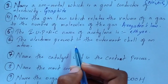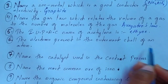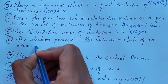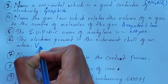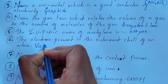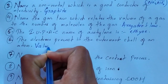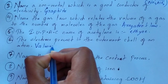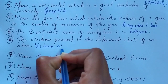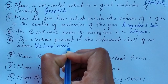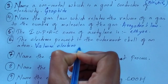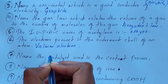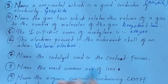Question number 6: name the electrons present in the outermost shell of an atom. The electrons present in the outermost shell of an atom are known as valence electrons.